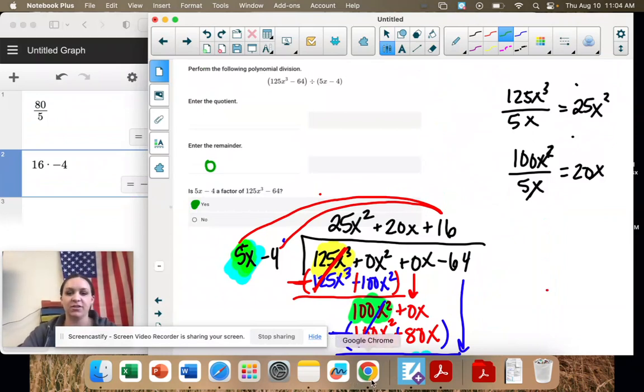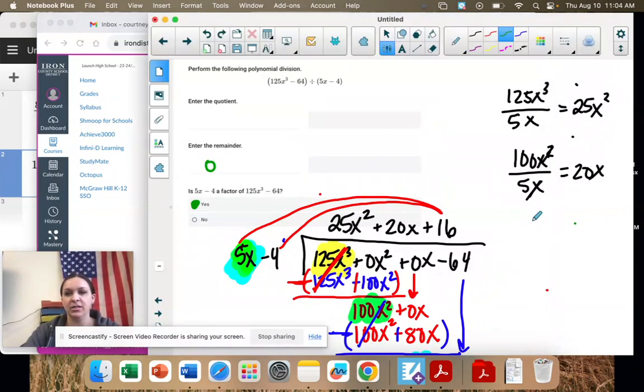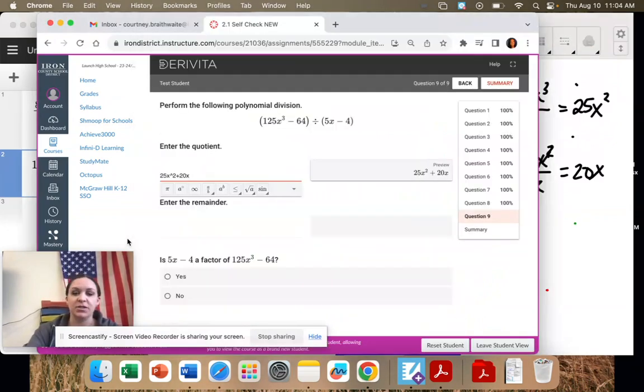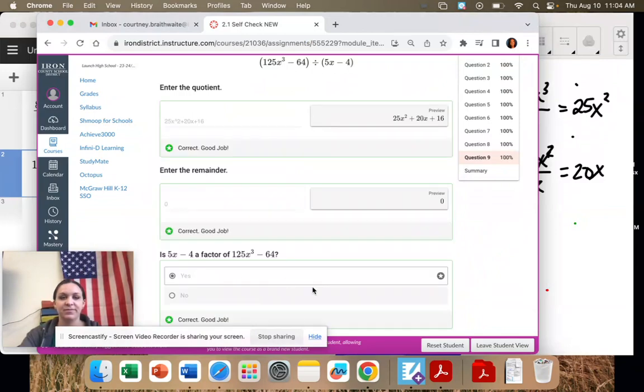Yes. And our quotient is 25x² plus 20x plus 16. 0 remainder. So yes, it's a factor. Yay!